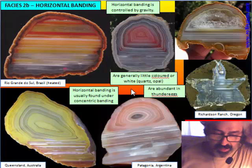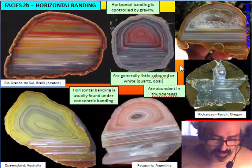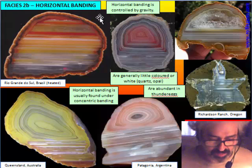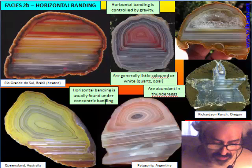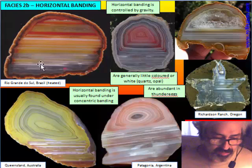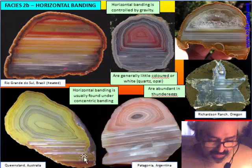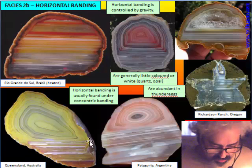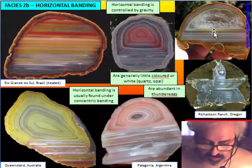The second banding structure is horizontal banding — quite common but not present in all deposits. Some deposits never have flat horizontal banding; for example, Laguna agate is never found with horizontal banding. It is very rare to find nodules completely filled by horizontal banding. The more common situation is that horizontal banding occupies the lower half of the nodule while concentric banding is in the upper portion, sometimes followed by quartz.